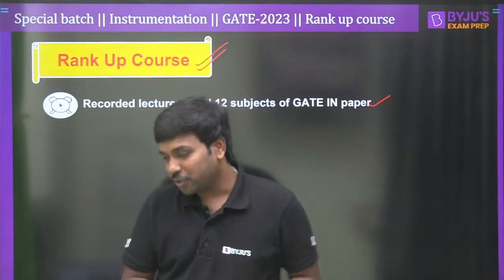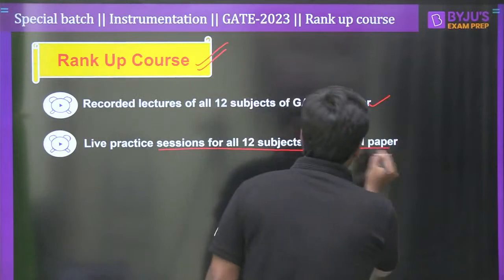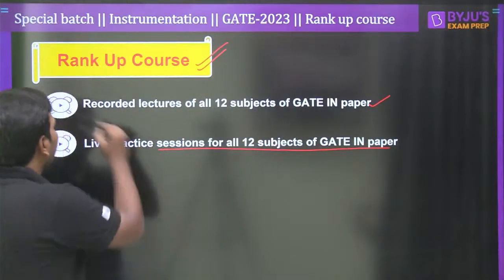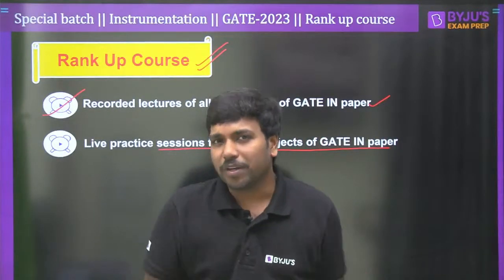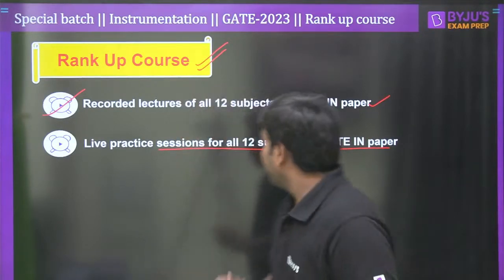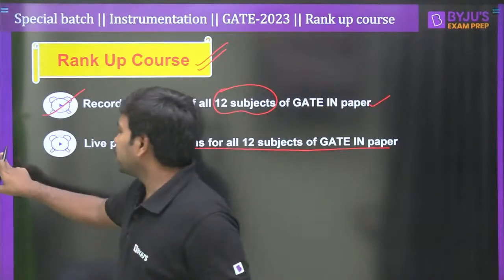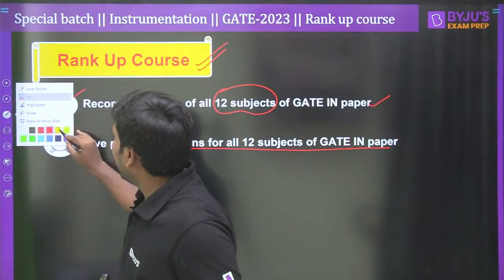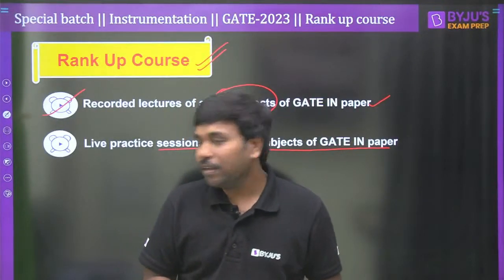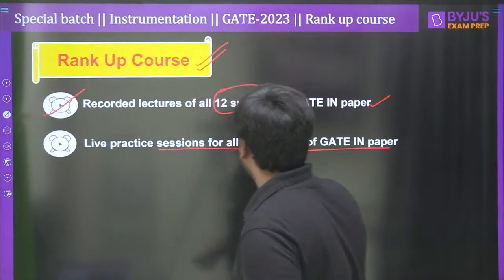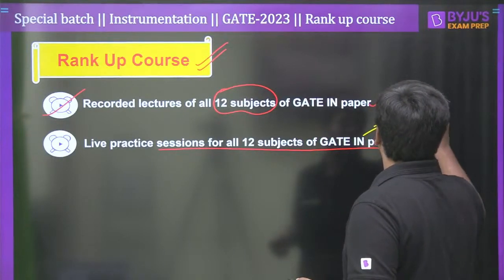Most importantly, live practice sessions for all 12 subjects of the GATE IN paper. You may ask: we've gone through recorded lectures and understood the subject, but where do we practice? In the recorded lectures themselves we've covered so many questions — each faculty covers at least 200-plus questions per subject. Even then you may require more practice, so we are coming up with live practice sessions for all 12 subjects. These already started from August 23.